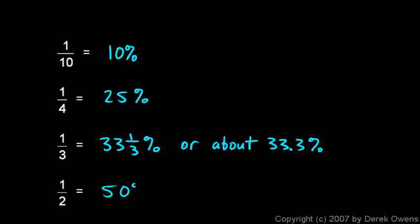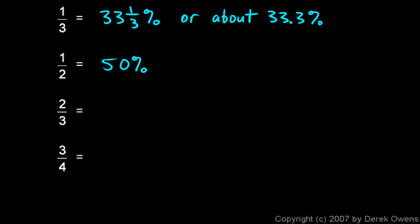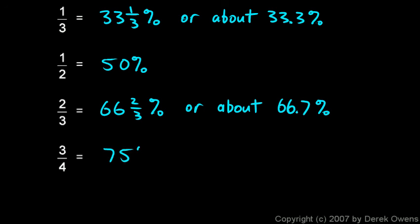1 half is 50%. 50% of something is half of something. And I'll scroll on down the list here. 2 thirds is 66 and 2 thirds percent. Or approximately 66.7%, and 3 fourths is exactly 75%. So those are some common fractions, and you should know the equivalent percentages for those fractions.